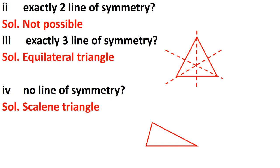Part three asks for exactly three lines of symmetry — the answer is an equilateral triangle, which has all three sides equal and therefore three lines of symmetry. Part four asks for no line of symmetry — the answer is a scalene triangle. Award marks for each correct part, and remember you must draw the figure as well.